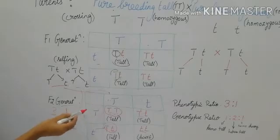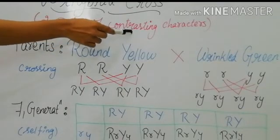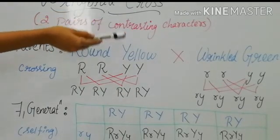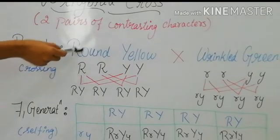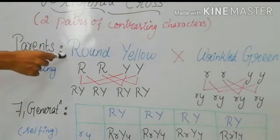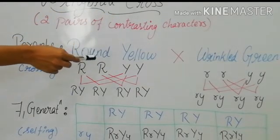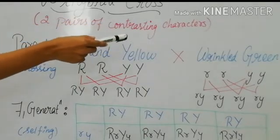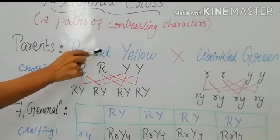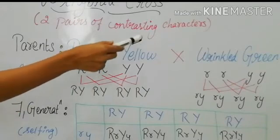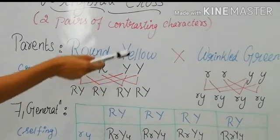Next we can see about dihybrid cross. Dihybrid cross is the inheritance or crossing of two pairs of contrasting characters. The two contrasting characters here are the shape and color of the seeds. The shapes are round and wrinkled, and the colors are yellow and green. Round yellow is the dominant character and wrinkled green is recessive.